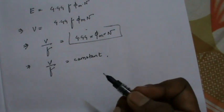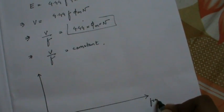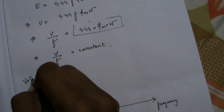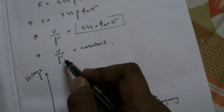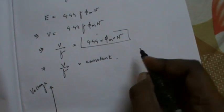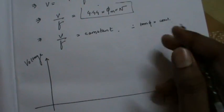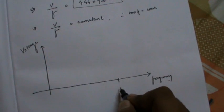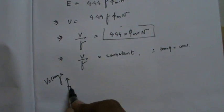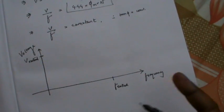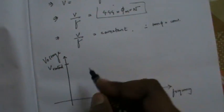Now let us concentrate on the practical significance of this. We will draw a graph with frequency on the horizontal axis and voltage on the vertical axis. V by F is actually a slope, and when this slope is constant it means tan theta is constant. The rated frequency is 50 Hz and the rated voltage for a three-phase system is typically 400 V. We draw this graph according to our system parameters.